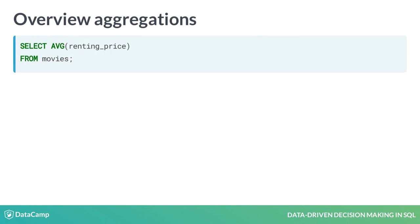In this query, the column renting price from the table movies is aggregated by using the AVG function, short for average. So we get the average price for renting a movie.